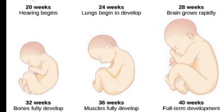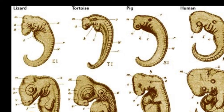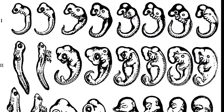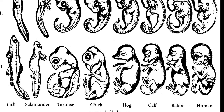Human embryos and babies look like those of other animals in the early period of pregnancy, as seen when comparing humans to lizards, tortoises, pigs, fish, salamanders, chickens, hogs, calves, and rabbits. As the pregnancies advance, the different animals develop more into their own species.